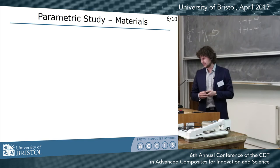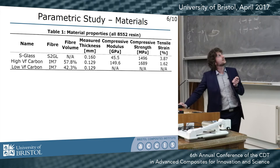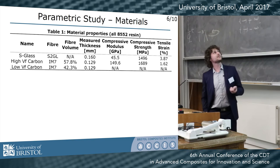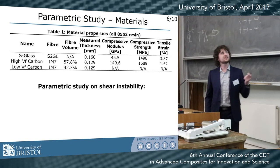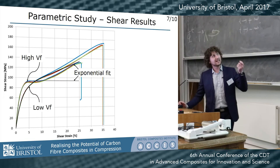I'm going to show you a study I've done to investigate this further. I used standard materials — IM7/8552. I've got two carbons: a high-volume-fraction carbon and a low-volume-fraction carbon. It's the same fiber and same resin, just a different fiber-volume fraction. I've also got S-glass. I did a parametric study on the effects of shear instability, including a shear test and a compression-via-bending test. These are my shear results.